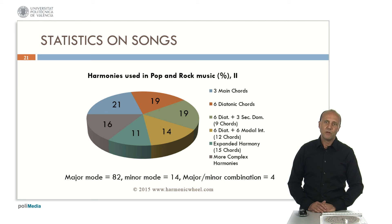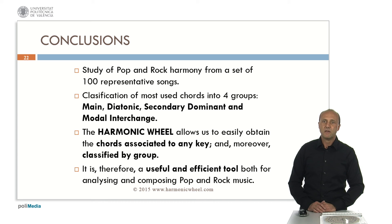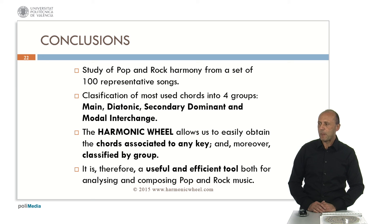And more complex harmonies, we have 16%. As conclusions, we performed a study of pop and rock harmony from a set of 100 representative songs. We classified the most used chords into four groups: main, diatonic, secondary dominant, and modal interchange chords. The harmonic wheel, as we showed, allows us to easily obtain the chords associated to any key, and moreover, classified by group, which is very important. Therefore, the harmonic wheel is a useful and efficient tool both for analyzing and composing pop and rock music. You can find all the information on the web page harmonicwheel.com. Thank you very much for your attention.